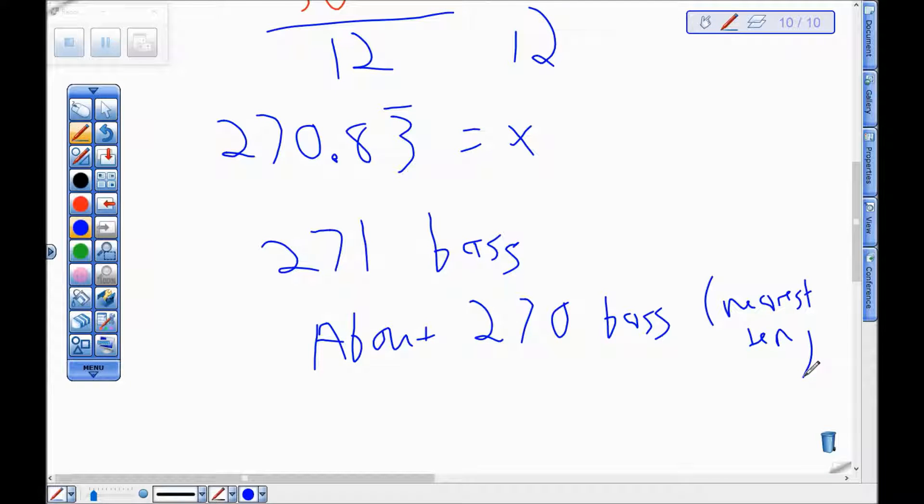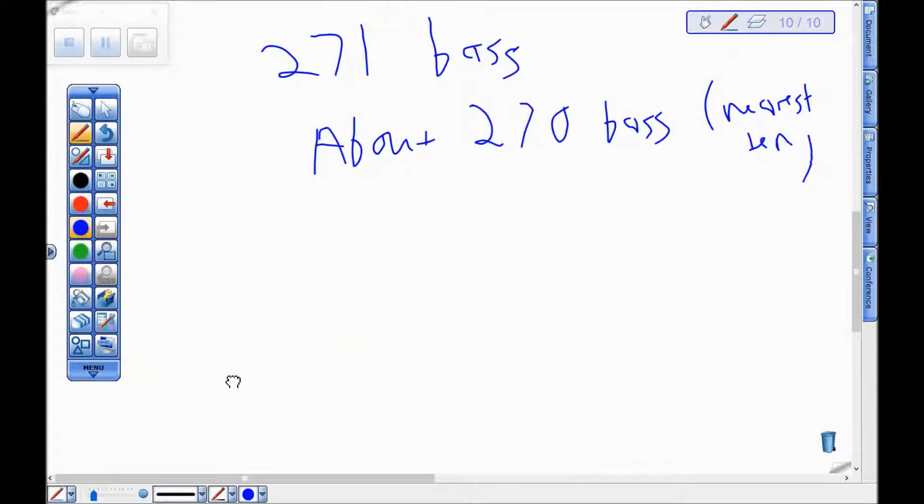Or if I wanted to be really general and make a broader estimate, I would say slightly less than 300. Who knows what that means, but 270, that's 90 percent of 300, so slightly less than 300 seems viable.